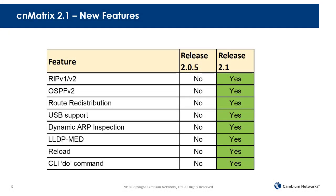Here's a quick high-level summary of the new features. The new features in 2.1 not in previous releases include dynamic routing with RIP and OSPF including route redistribution, support for our USB memory port, dynamic ARP inspection, LLDP-MED added to our LLDP support, a very useful reload feature, and also a very anticipated do command which makes CLI much easier to use.